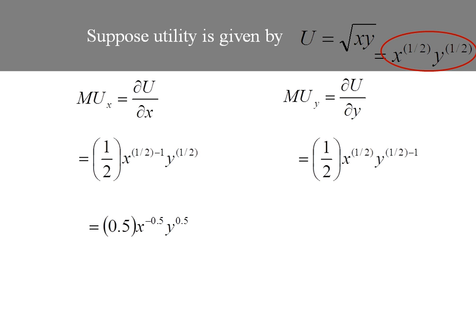When I take the marginal utility of y — the first derivative of utility with respect to y — it's symmetric in this case. The exponent on y, the one-half, comes down in front; x to the one-half stays as it is; and then y has its exponent reduced by 1. So our marginal utility of good y is 0.5 times x to the 0.5, y to the negative 0.5.